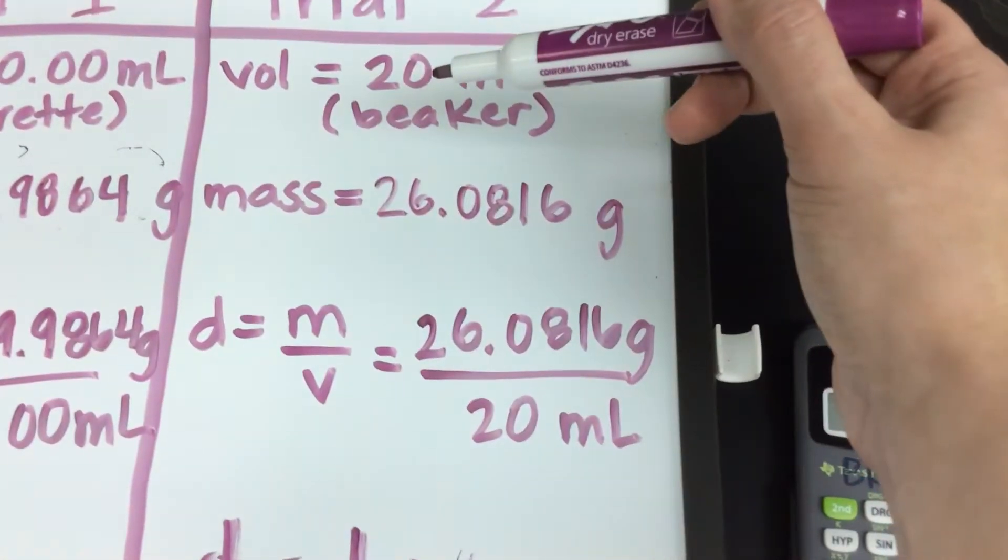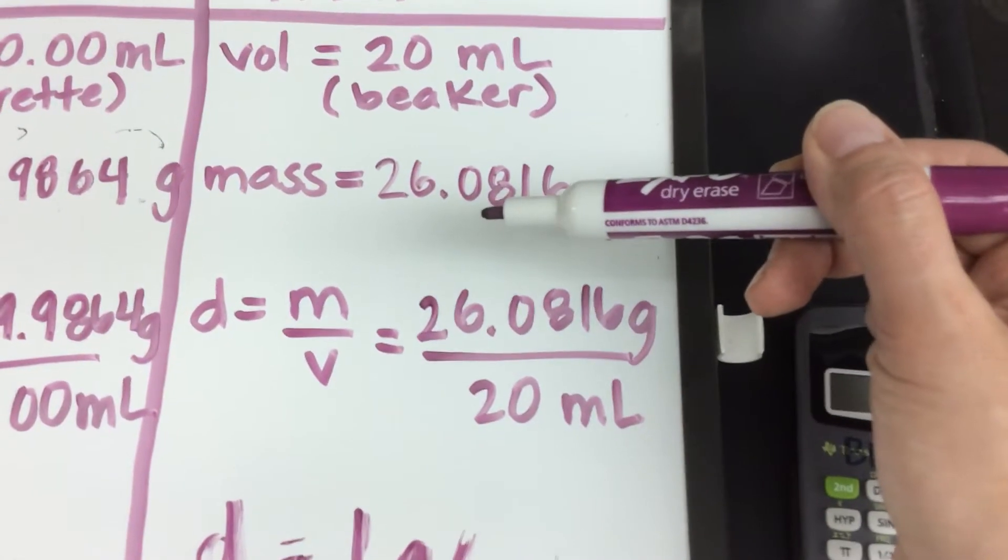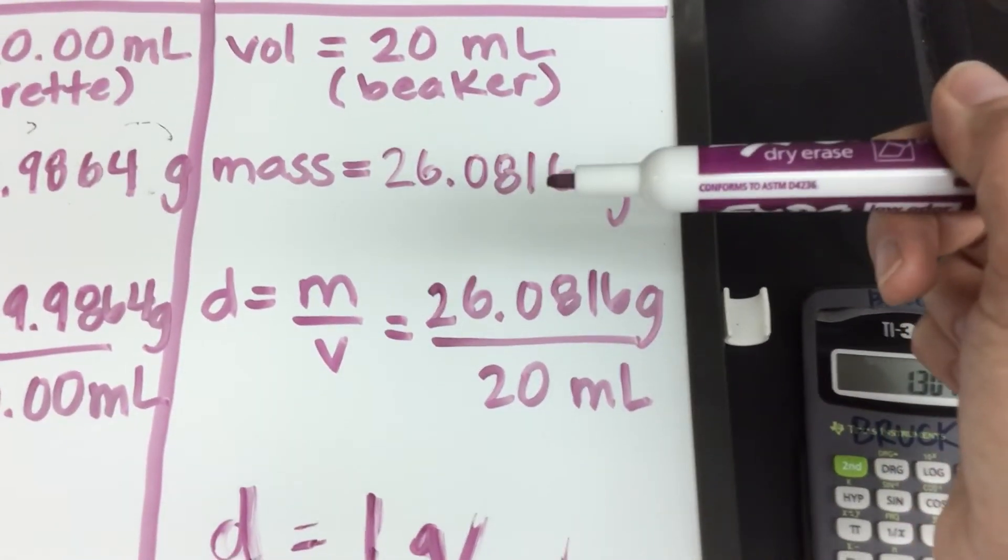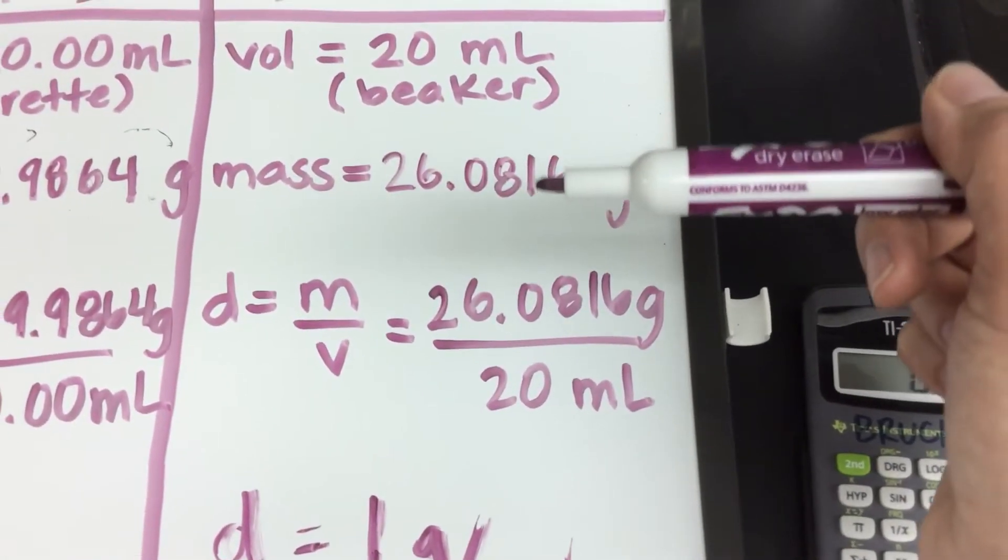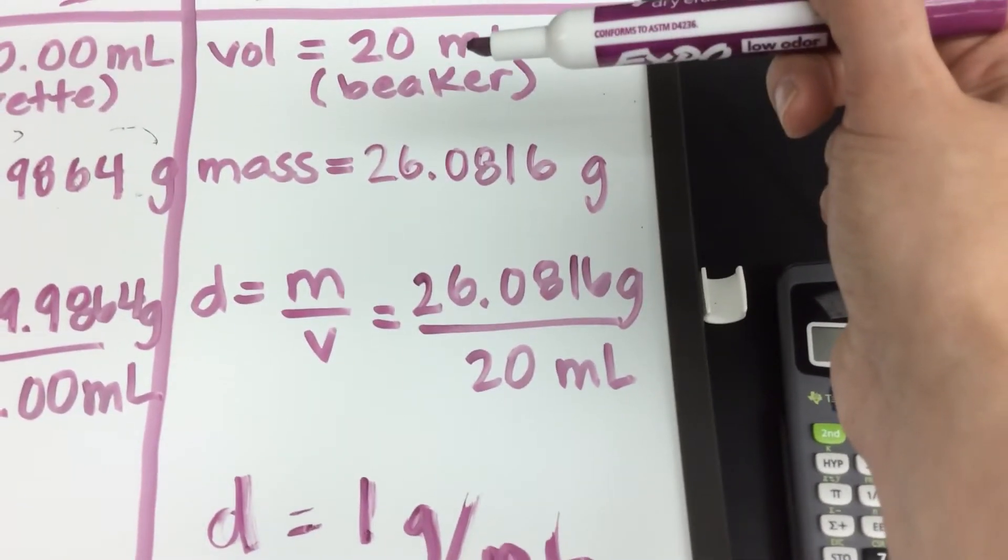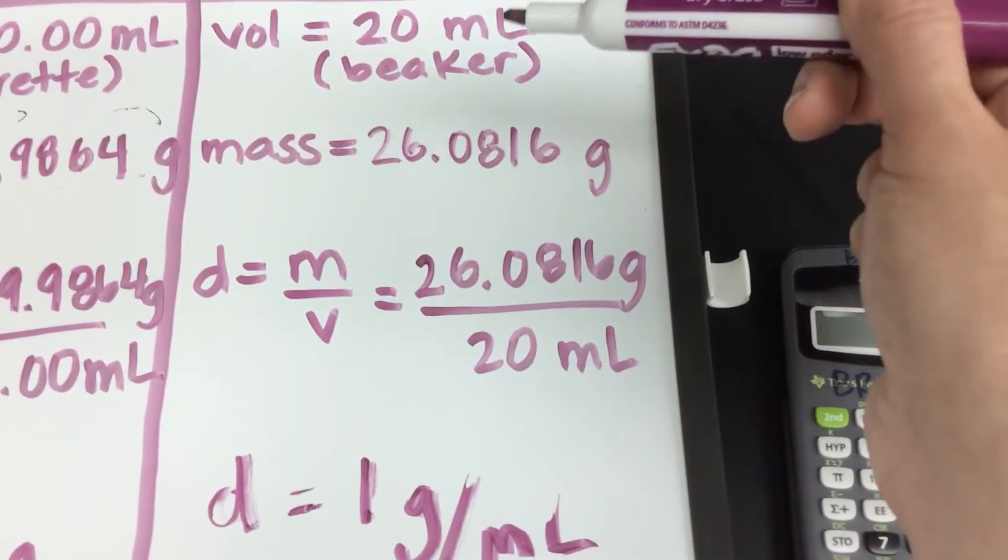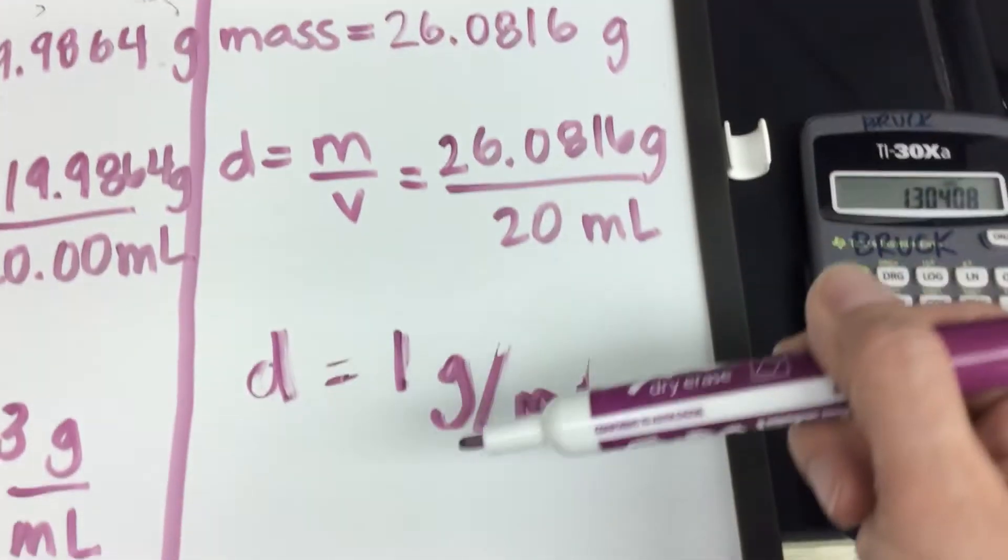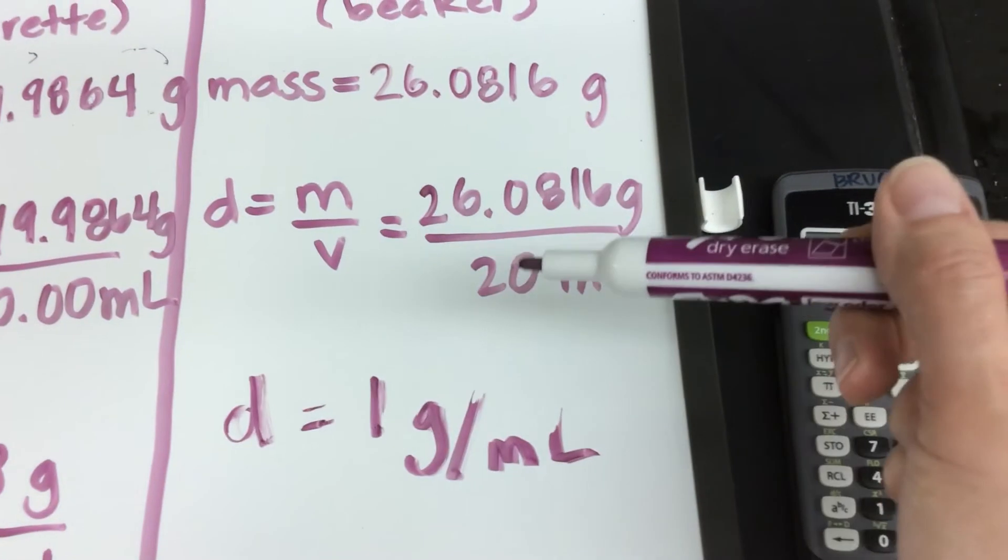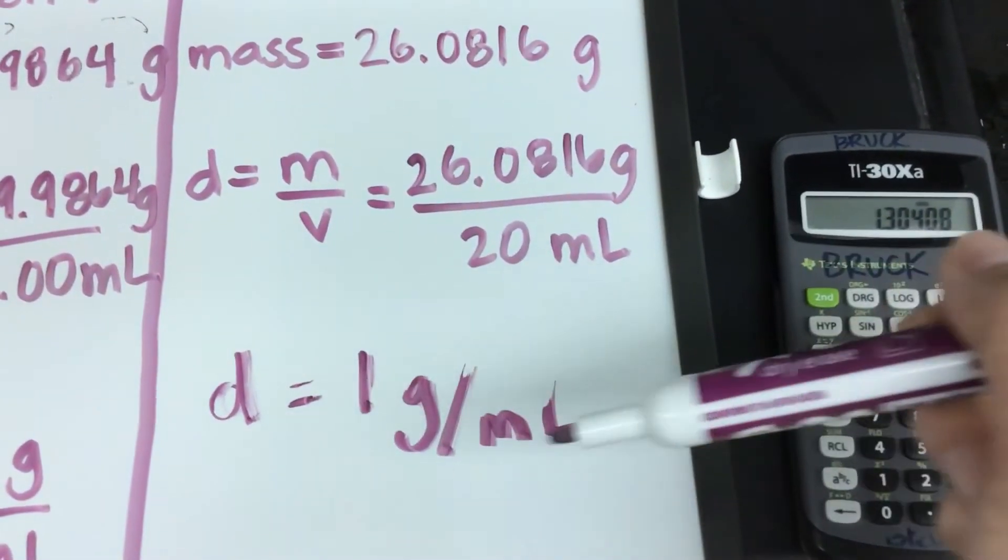Why? Because this number has one significant figure. This number has six significant figures. You're only as accurate as your worst measurement. My volume measurement was clearly my worst measurement. This measurement stunk. This measurement was very accurate. But because this measurement stinks, my final answer is just as stinky as my worst measurement. So that's why I've only got one gram per milliliter.